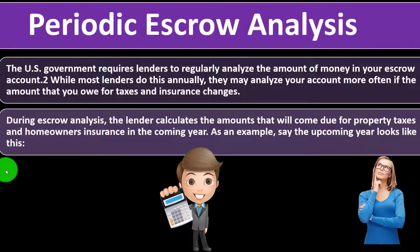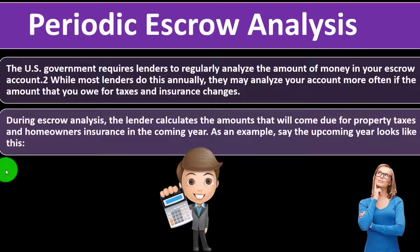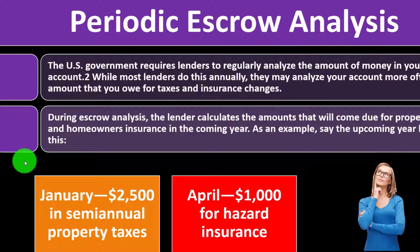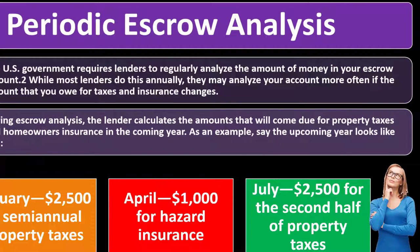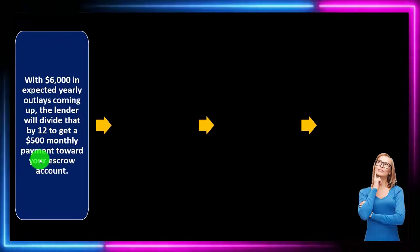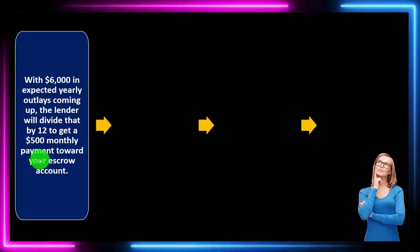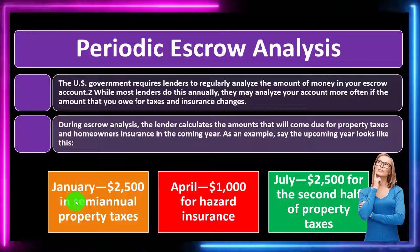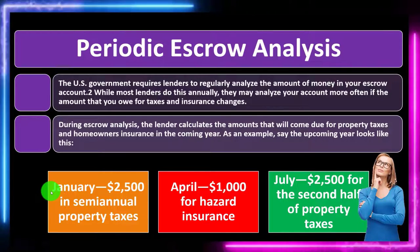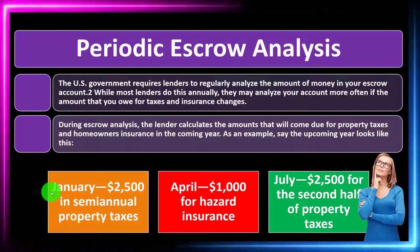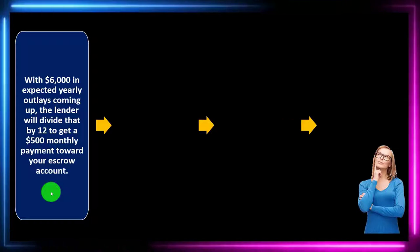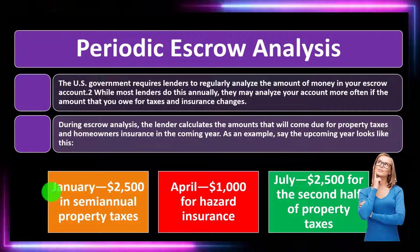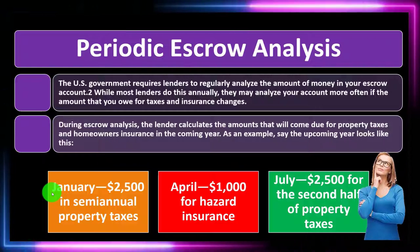During escrow analysis, the lender calculates amounts due for property taxes and homeowners insurance in the coming year. For example: January — $2,500 in semi-annual property taxes; April — $1,000 for hazard insurance; July — $2,500 for the second half of property taxes. With $6,000 in expected yearly outlay, the lender divides by 12 to get a $500 monthly payment toward your escrow account.